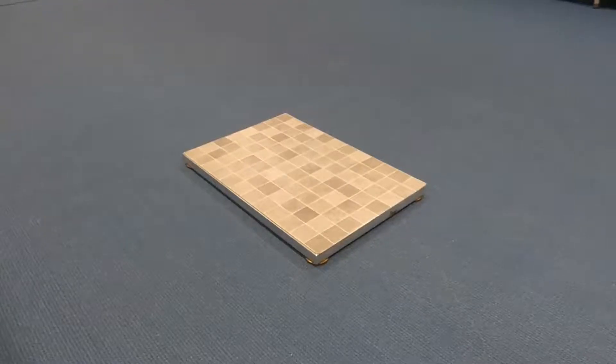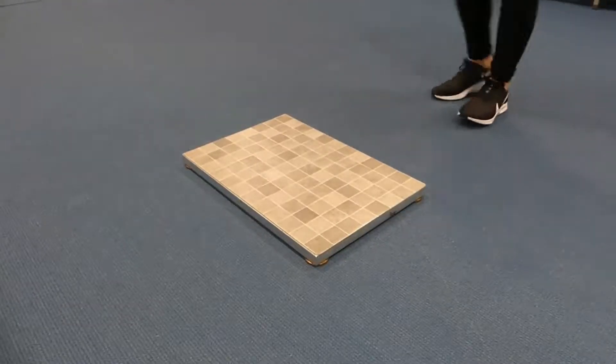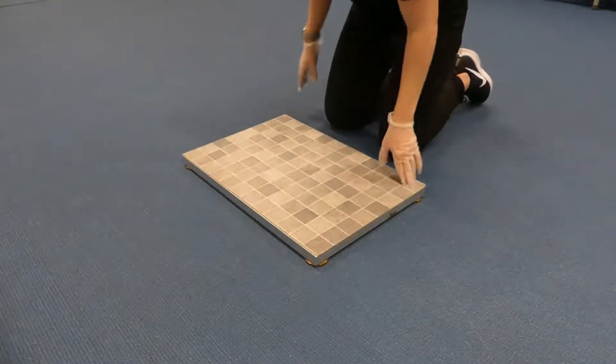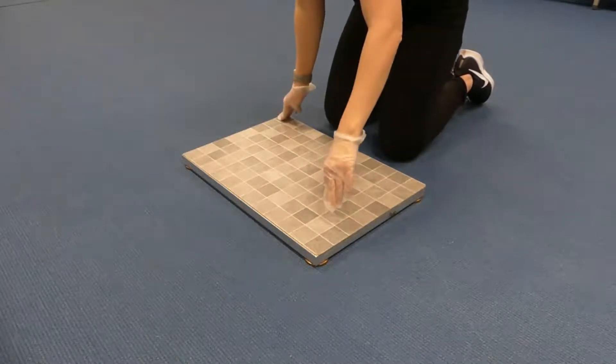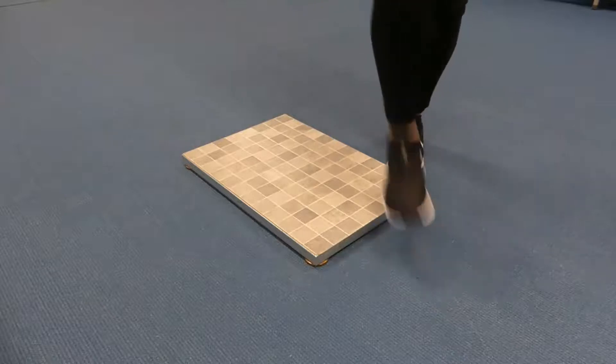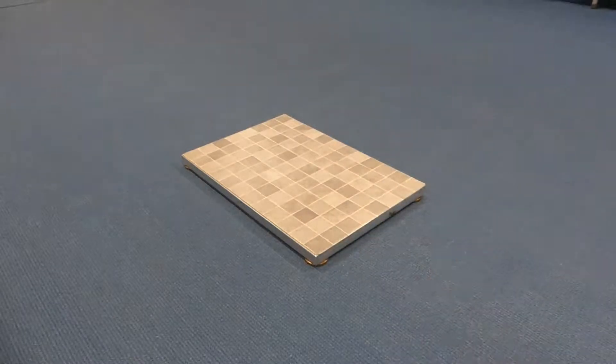We will now look at how to set up the Kistler and use Bioware. First you must place the force plate on a flat surface. Notice how I place it down and check all four corners to ensure it is flat and stable. If you notice any movement you must move the force plate until you find somewhere flat.